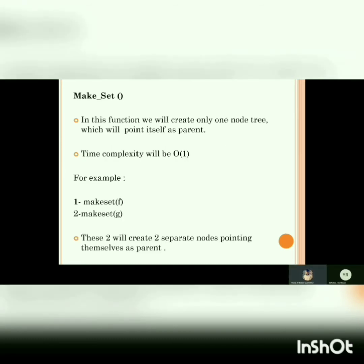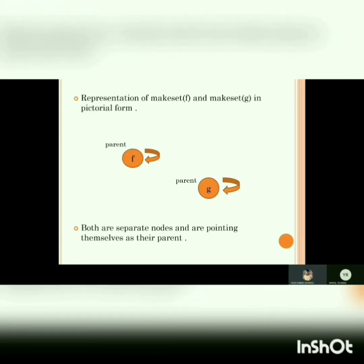What is make set? In this function we will create a single node tree which will point to itself as parent. The time complexity will be O(1). For example, we are going to call this function two times: make set F and make set G. These two will create two separate nodes pointing themselves as parent. As you can see in the pictorial representation, both are separate nodes pointing themselves as parent.